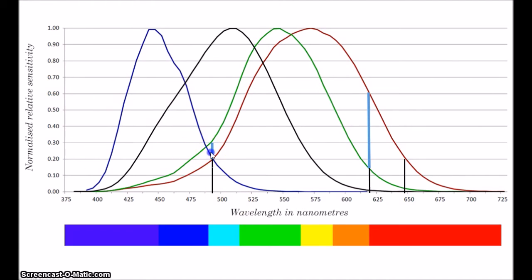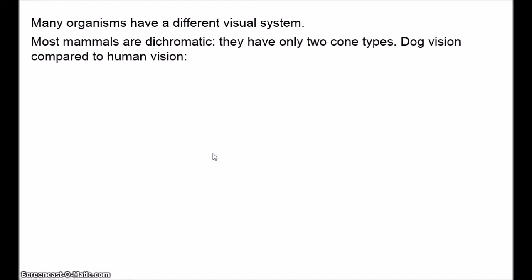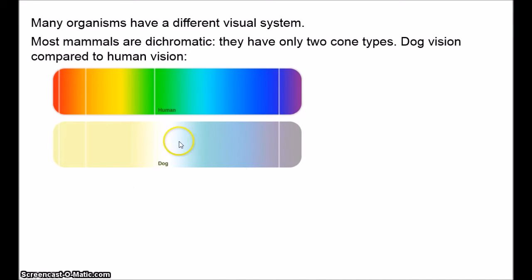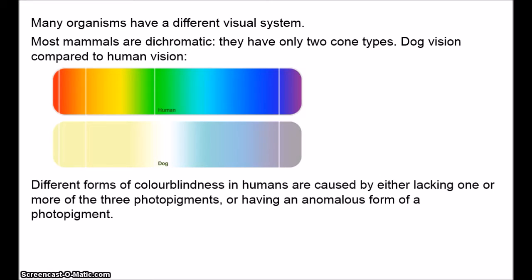The human eye has three cones. Most animals have a different system. Many mammals — dogs and elephants — are dichromatic: they have only two types of photopigment, which renders them effectively red-green colourblind. Dogs can basically only see a kind of yellow-to-blue spectrum. Many marine mammals have only one type of photopigment, making them monochromatic — they can't distinguish colours at all. Different forms of colourblindness in humans are caused by either lacking one or more of the three photopigments, or by having an anomalous form of one of them.